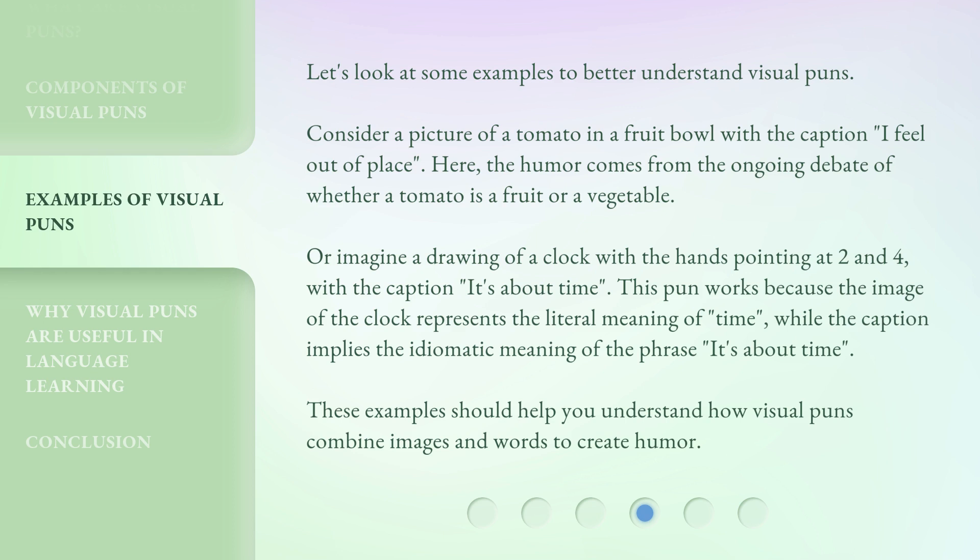This pun works because the image of the clock represents the literal meaning of 'time,' while the caption implies the idiomatic meaning of the phrase 'it's about time.' These examples should help you understand how visual puns combine images and words to create humor.